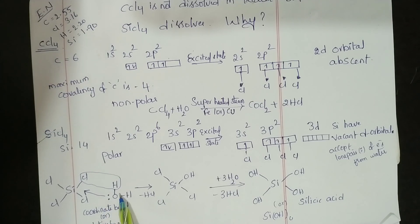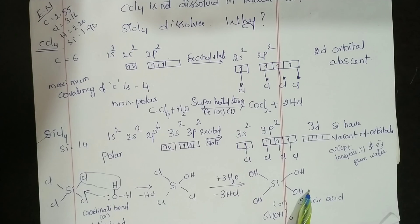This leads to formation of silicic acid. Here these four chlorine atoms are replaced by OH groups. So SiCl4 dissolves by hydrolysis.